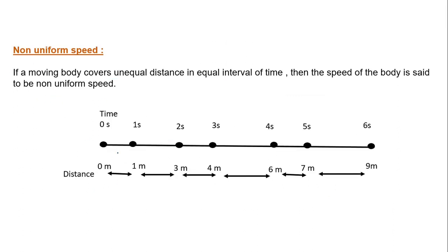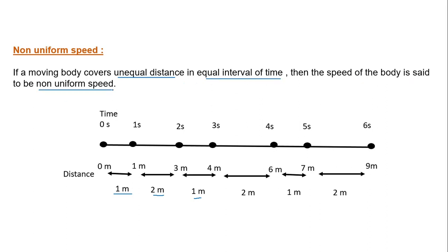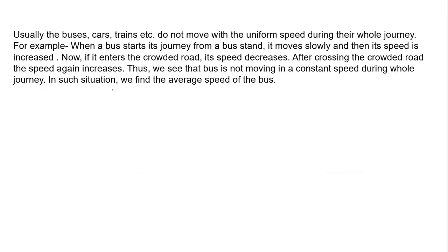Non-uniform speed: here it is shown how the distance is changing with time. In this case the distance covered by the object is not equal — 1, 2, 1, and so on. So if a body covers unequal distance in equal interval of time, the speed of the object is said to be non-uniform speed.